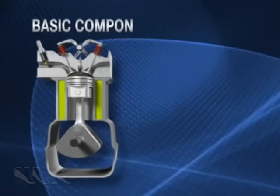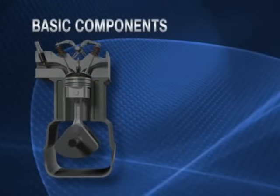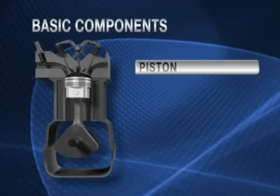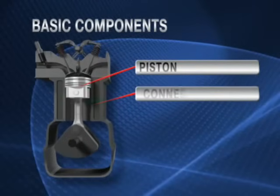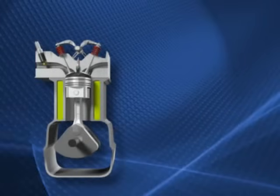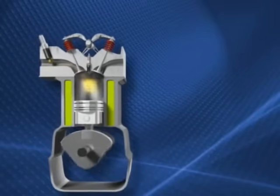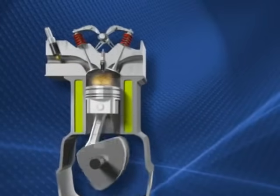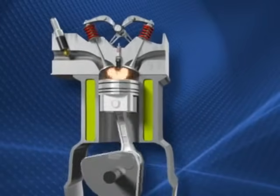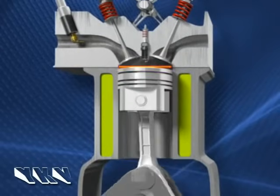Here are the basic components of every four-stroke gas engine: a piston, a connecting rod, and a crankshaft. As the piston travels up and down in the cylinder, this lateral motion is turned into a rotating motion at the crankshaft.